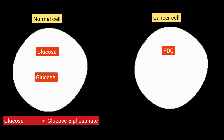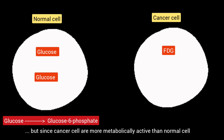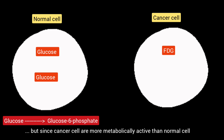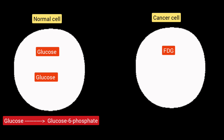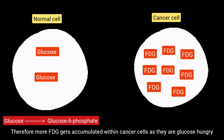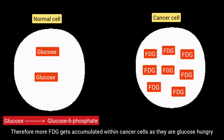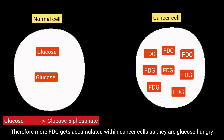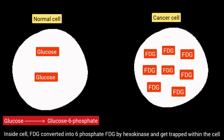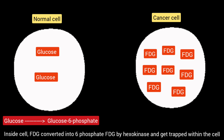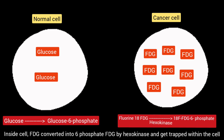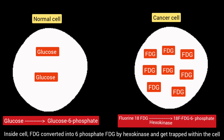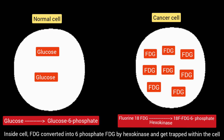Since cancer cells are more metabolically active than normal cells, more FDG accumulates within cancer cells as they are glucose hungry. Inside the cell, FDG is converted into 6-phosphate FDG by hexokinase and gets trapped within the cell.